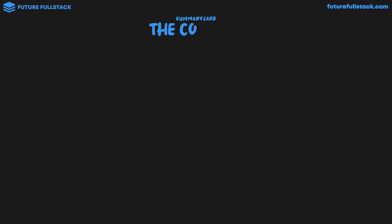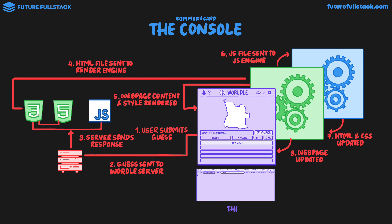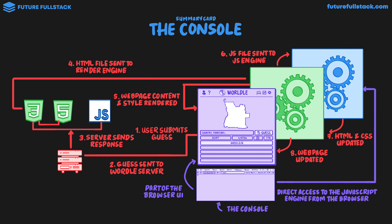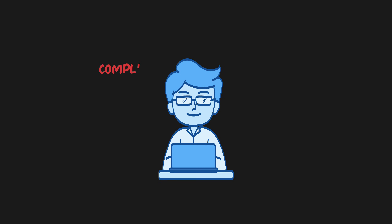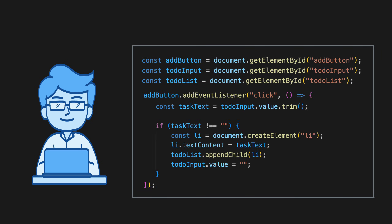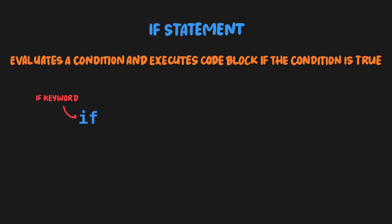So let's wrap up by building a summary card for the console. I'm going to add back in the diagram from the previous video about how a webpage works, and now add the console, which is part of the browser UI — something we can actually see and interact with in the browser. The console provides us direct access to the JavaScript engine, giving us the ability to execute JavaScript code outside of a script, as well as view log messages written inside scripts. If you've enjoyed this style of teaching and are looking to master JavaScript, you can join me in my JavaScript full course, available for free on my channel. The course is designed for complete beginners and covers everything you need to code JavaScript at a professional level.